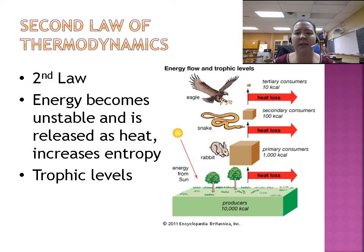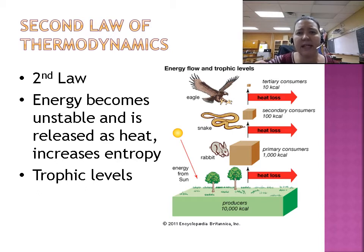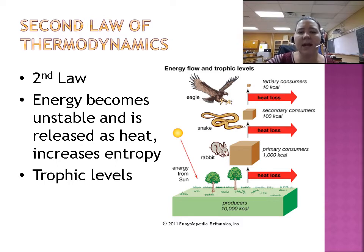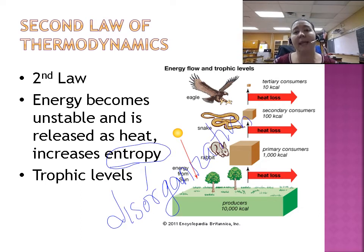The second law of thermodynamics is a bit more complicated. In the process of energy transformation, some energy is generally lost as heat and becomes unusable. We talked about this when we covered trophic levels and energy lost as heat. This increases what's called entropy, which is the disorganization of a system. You'll go much deeper into this in chemistry and physics, but you will see it in the book.